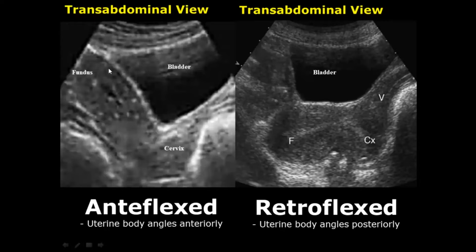In an anteflexed uterus, the body of the uterus will face anteriorly. There will be a bend and this angle will face towards the bladder, that is anteriorly. In a retroflexed uterus, there will be a bend in the uterine body and this angle will face posteriorly, away from the bladder.